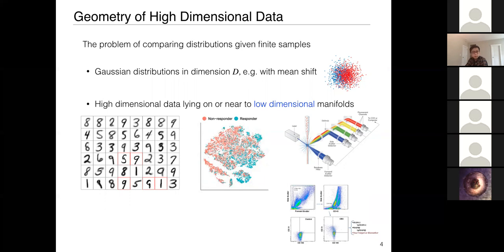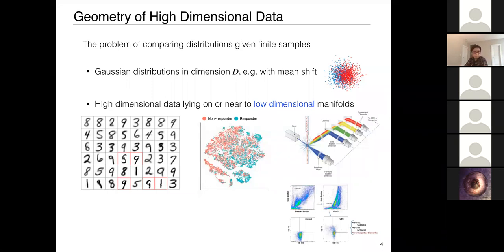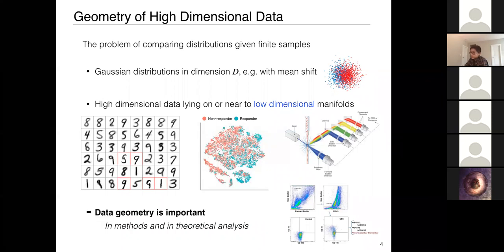Detecting a mean shift is one important type of problem. A related type is when your data, although in high dimension, has some low-dimensional structure — as seen in biological datasets where there are lines, sub-manifolds, or clusters. Another important case is images, especially image patches, which are manifold-like. The ambient space is the pixel space, so a very natural question arises: what role does data geometry play? We think data geometry is important and should be reflected in both the methods and their analysis.